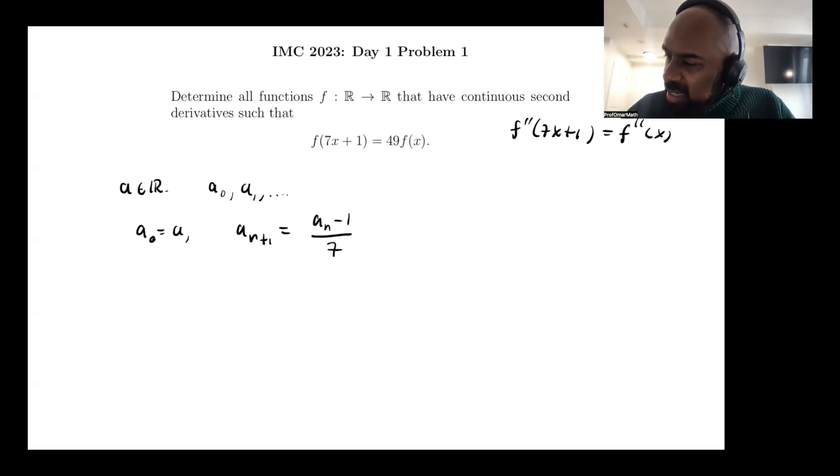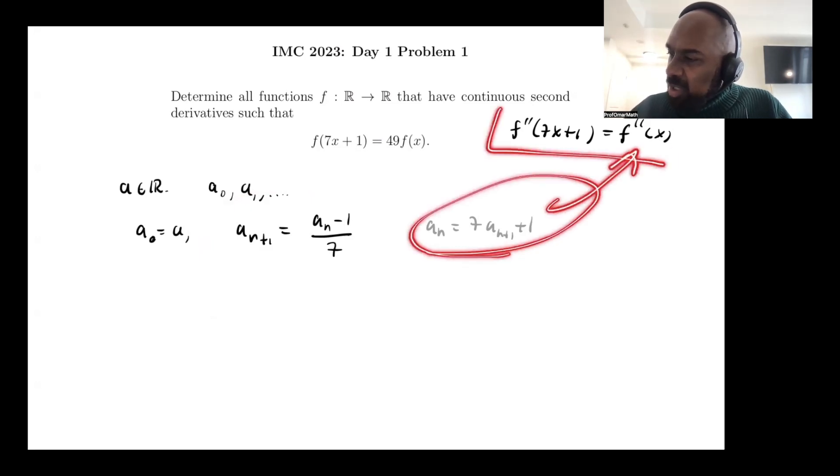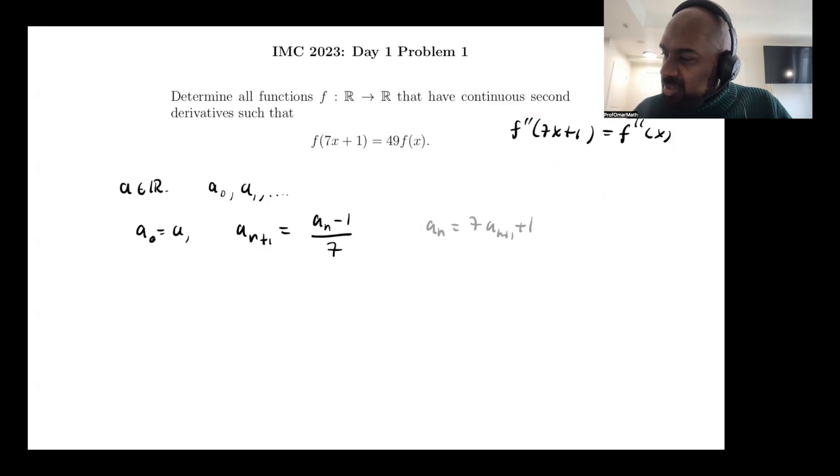We get a_n is actually 7a_{n+1} plus 1. And so if we evaluate the second derivative of f at this entire sequence, by this equality we got before, it's actually constant on that sequence. So we'll make the observation that f'' at a₀ equals f'' at a₁ equals f'' at a₂, etc.